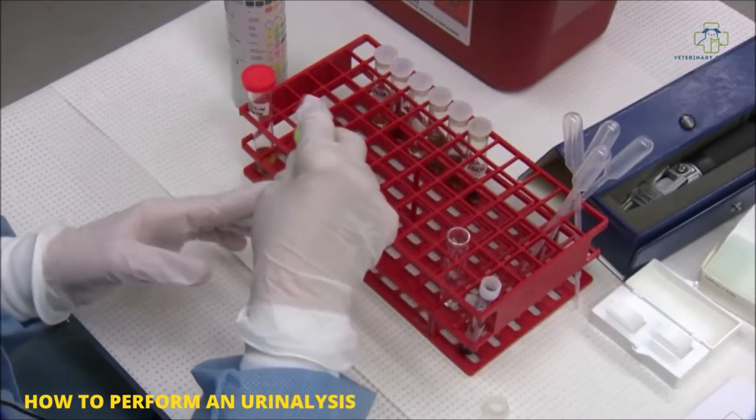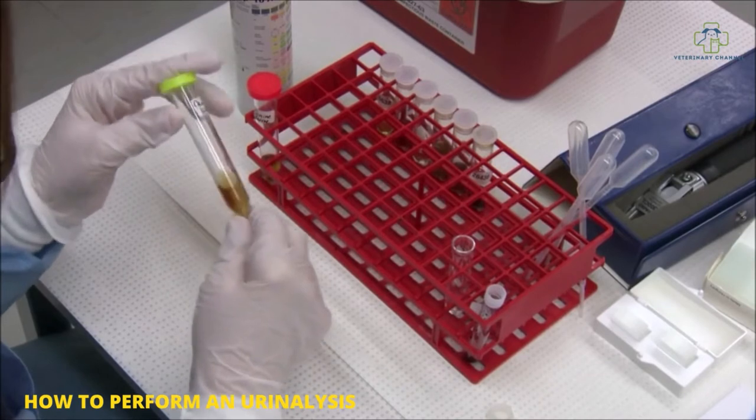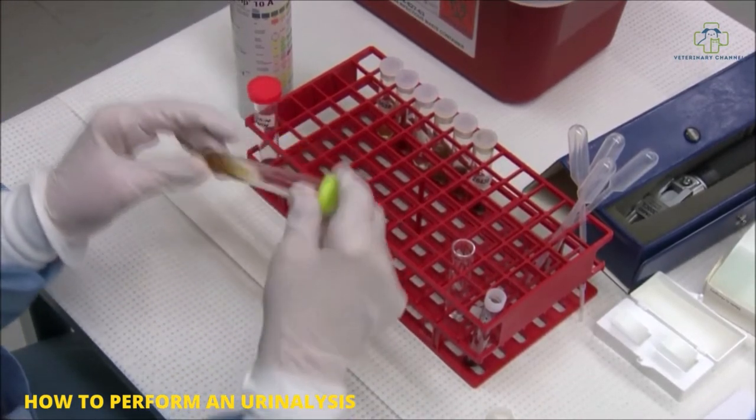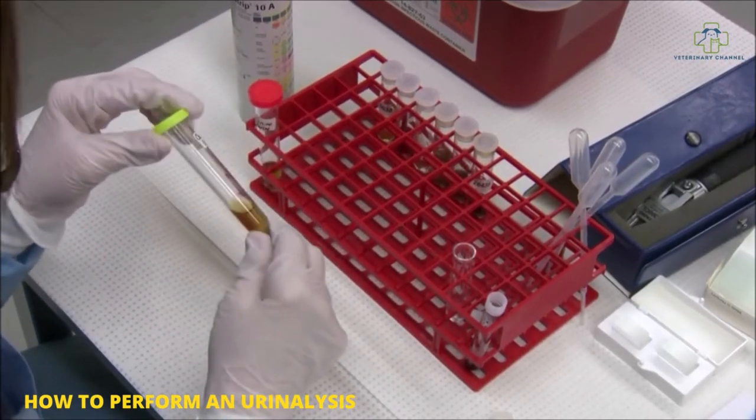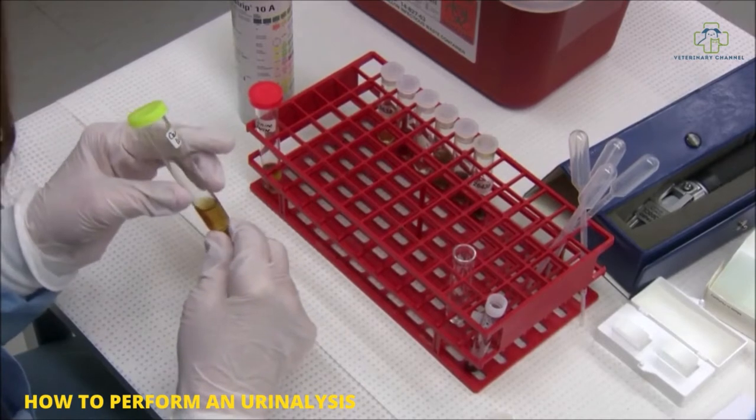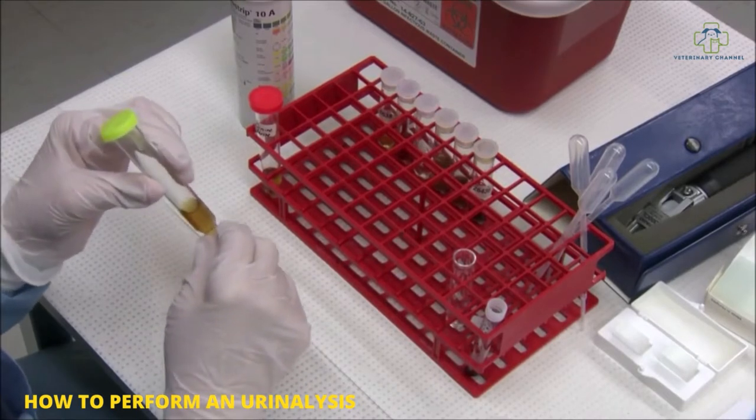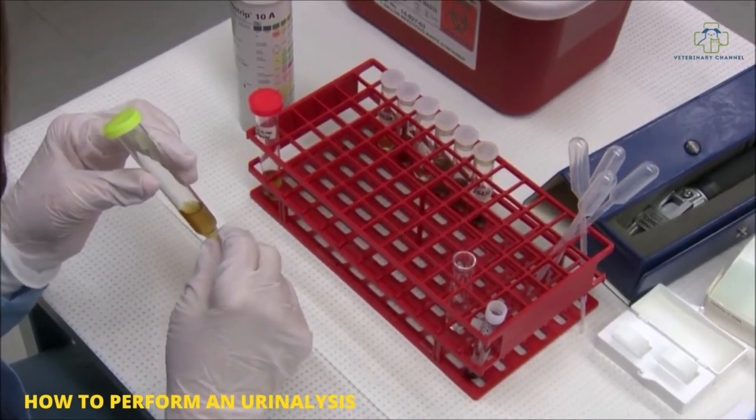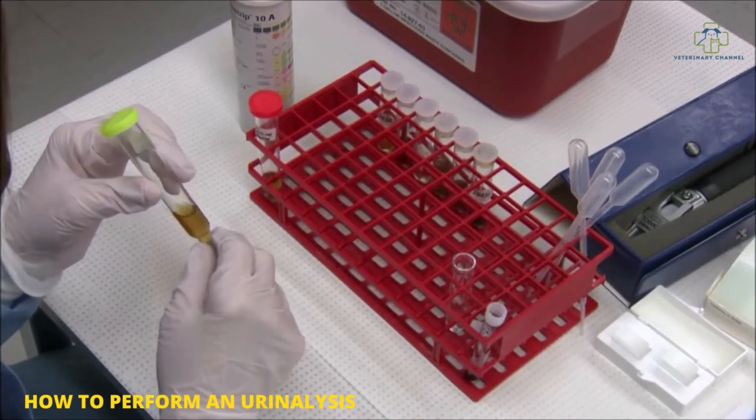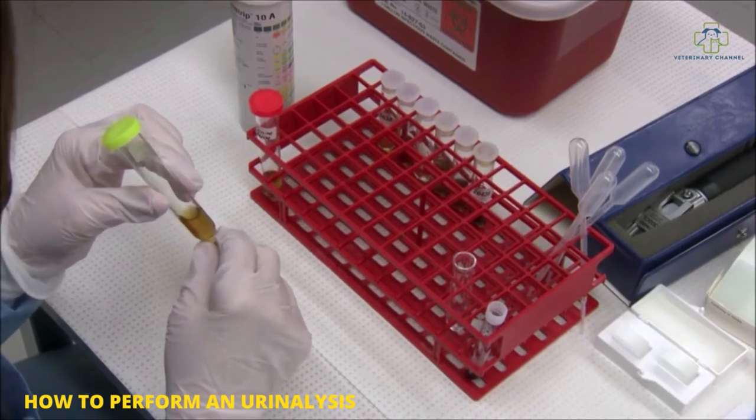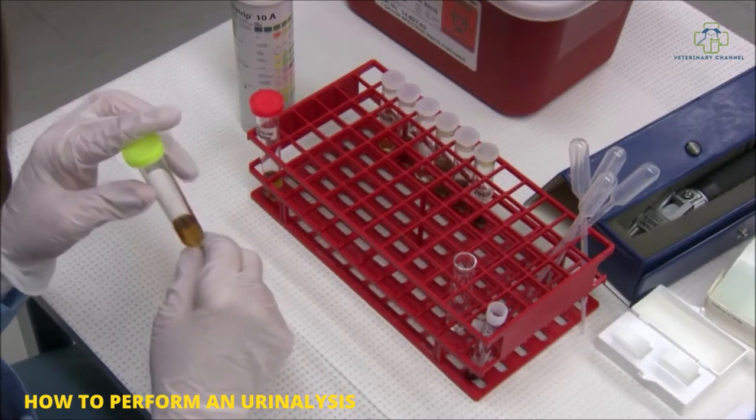Today I'm going to show you how to do a routine urinalysis. We start with 3ml which is used for interpreting microscopic sediments. If you get less than 3ml, you should record it on your report form. It's important to analyze your urine as soon as possible after collection. If you do refrigerate your urine, you need to let it warm for 30 minutes before testing, as the strips are meant to react at room temperature. Be aware that crystals may form in urine that has been refrigerated.